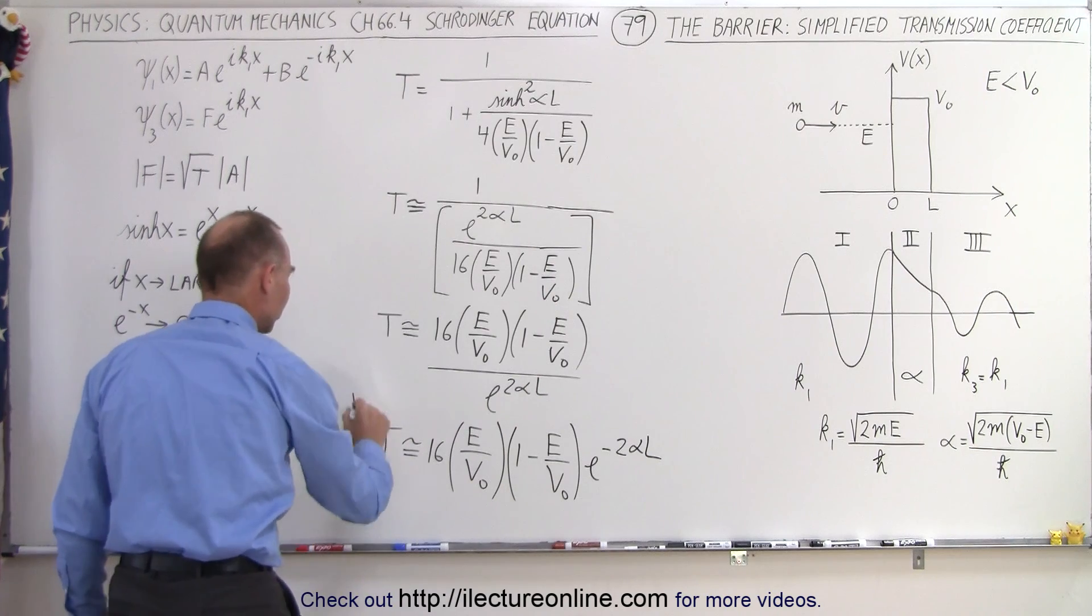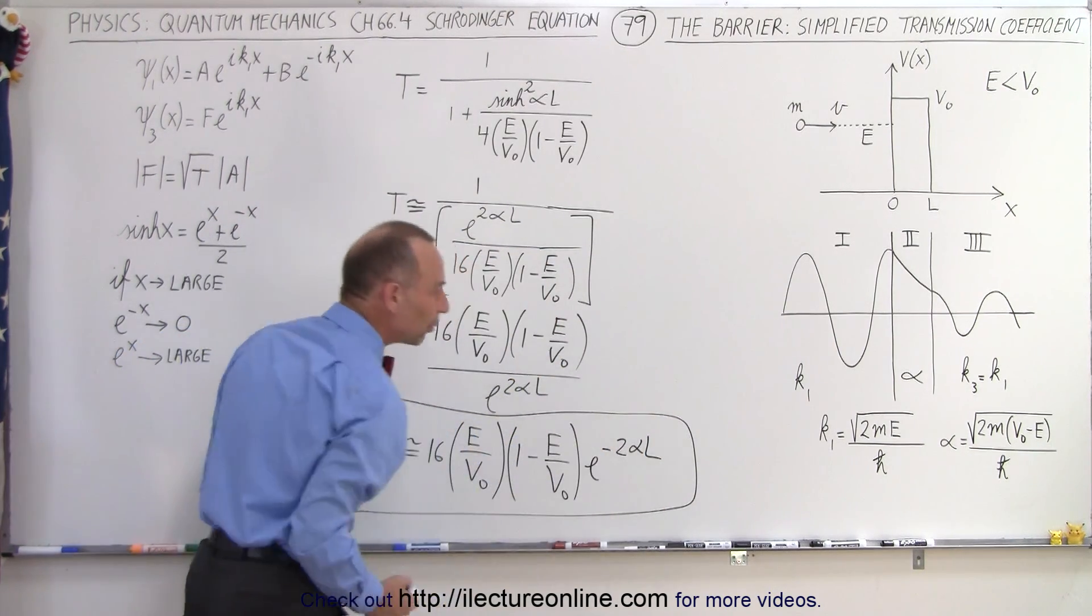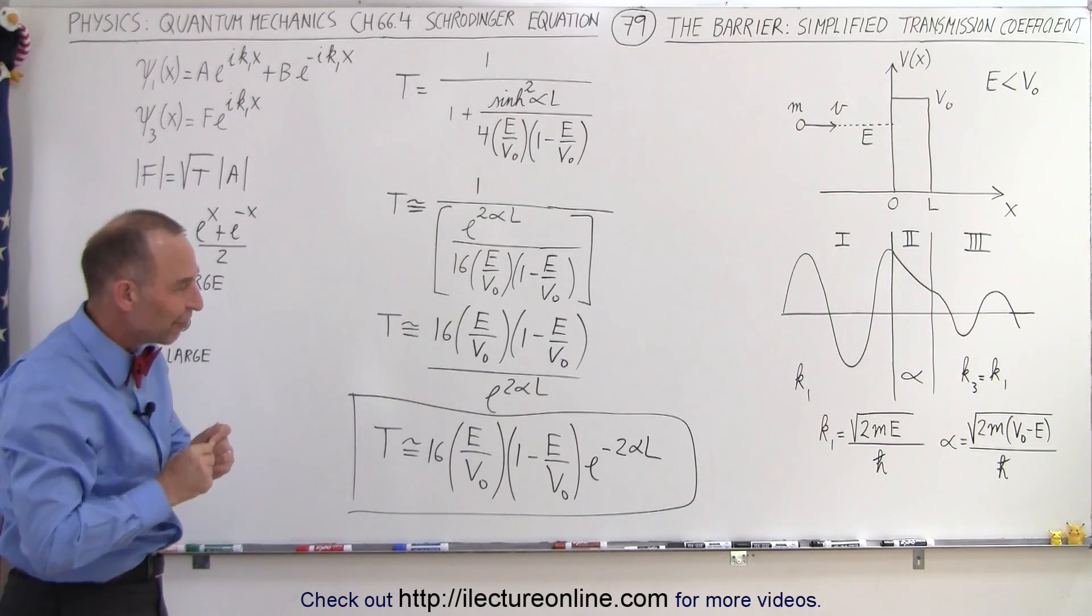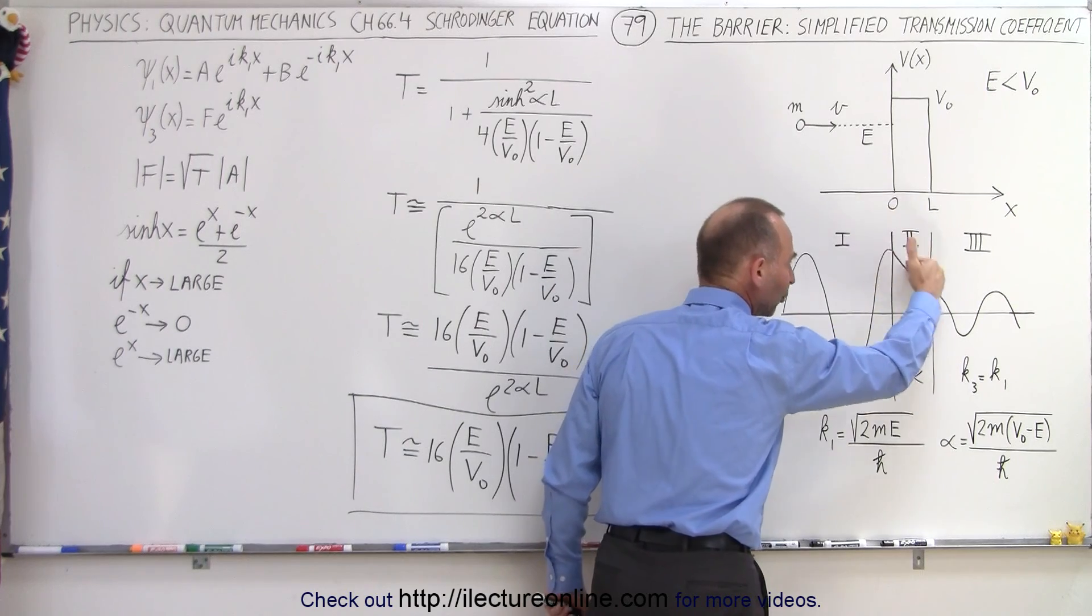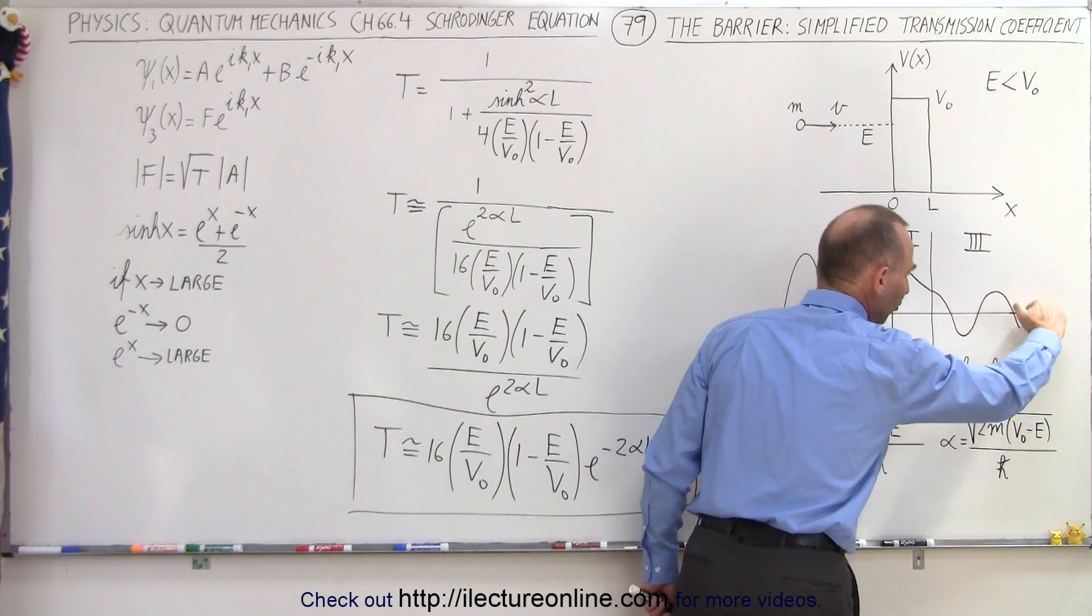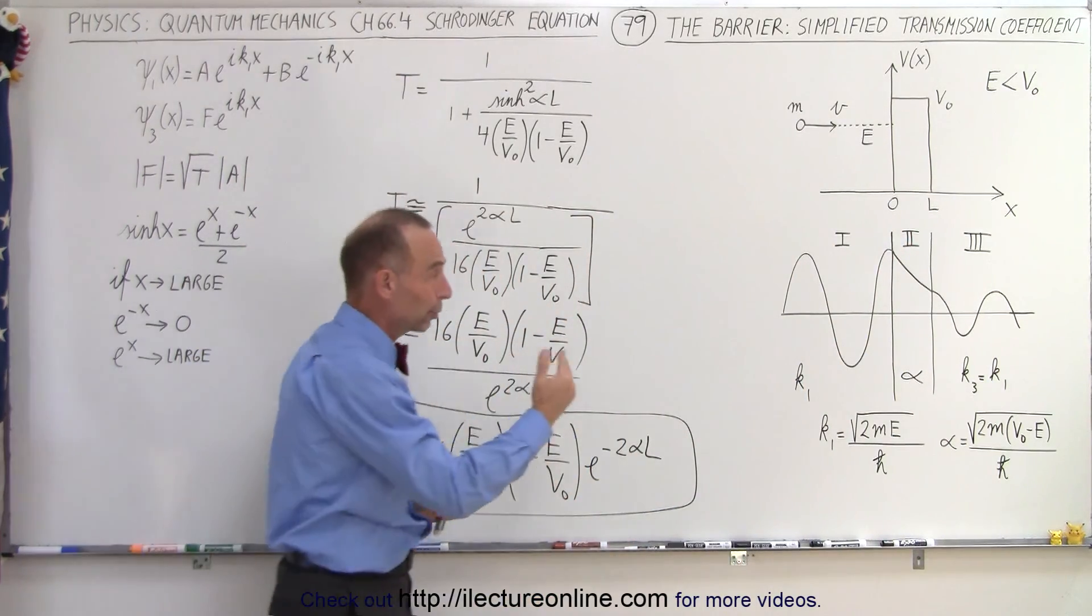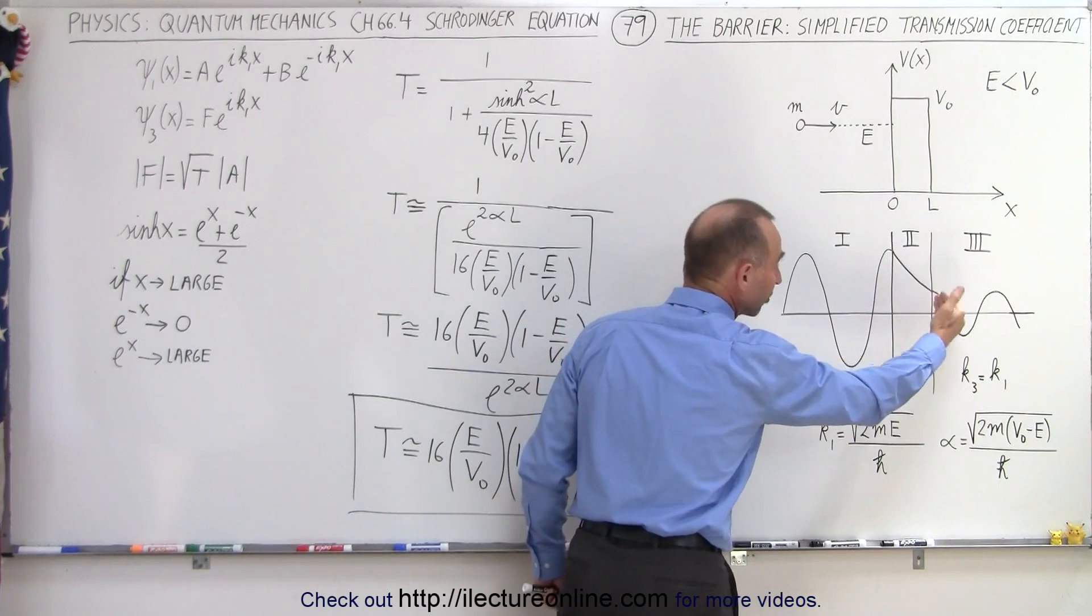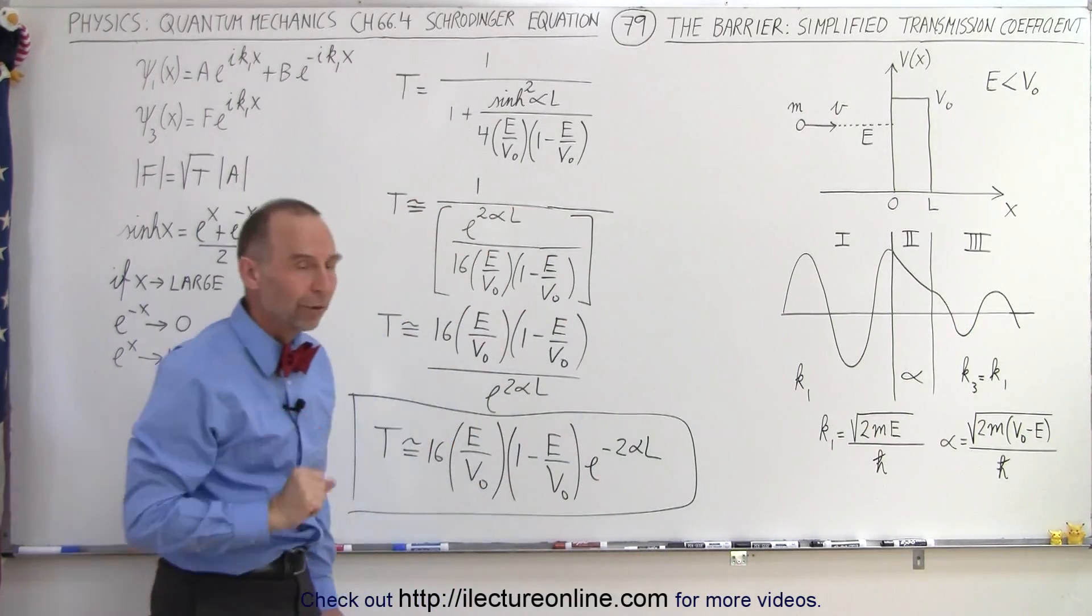You may remember seeing that term in some previous videos. The e to the minus 2 alpha L simply represents the decay function, the decay of the amplitude of the wave function as it goes through the barrier. Now, as the barrier becomes very wide, then this will essentially become zero after a certain distance. If it's not too wide, then the particle can emerge on the other side and continue with the wave function, however, with a smaller amplitude.